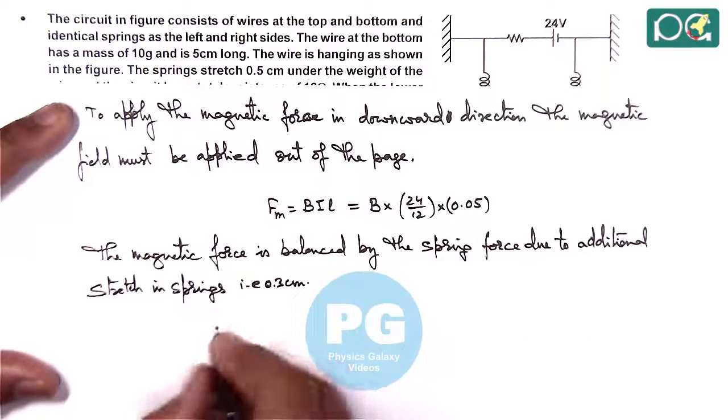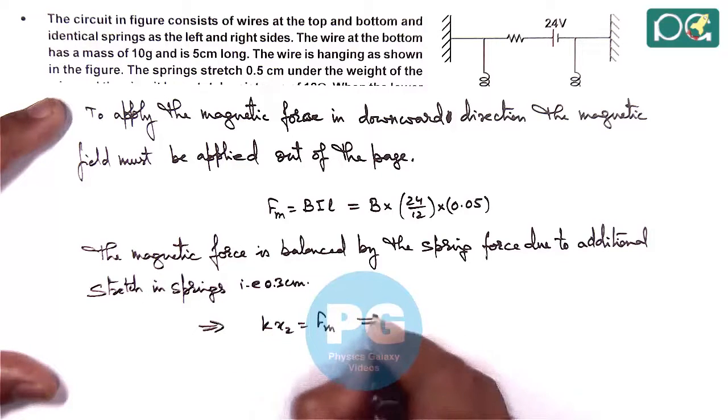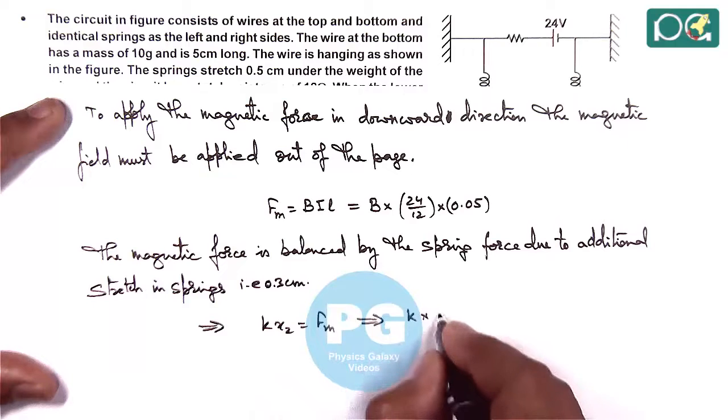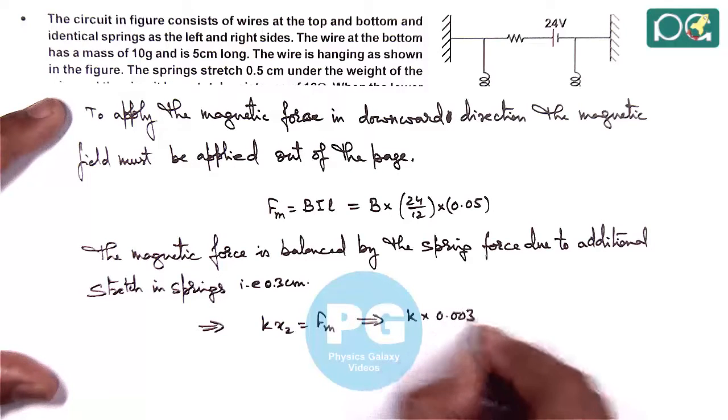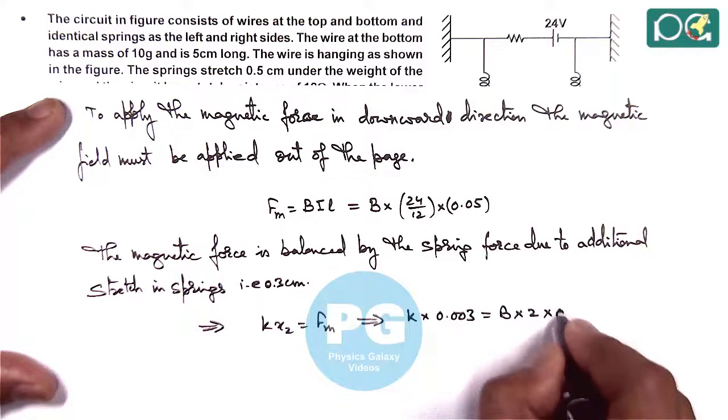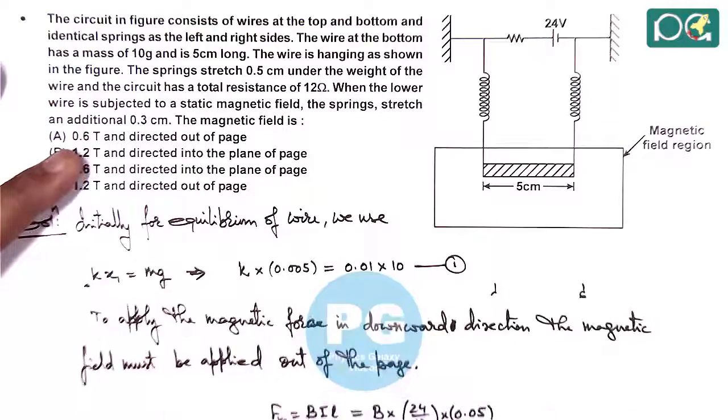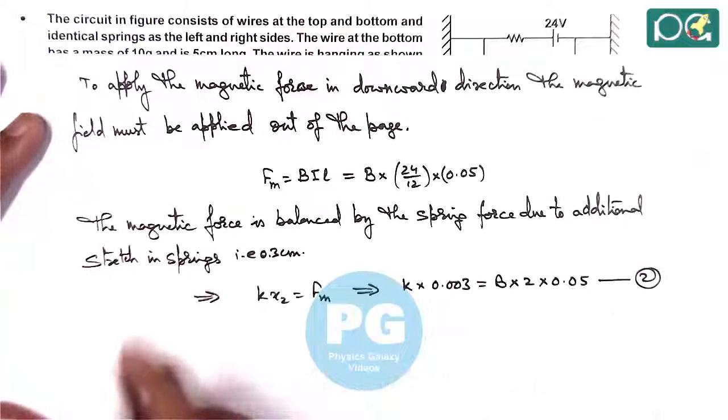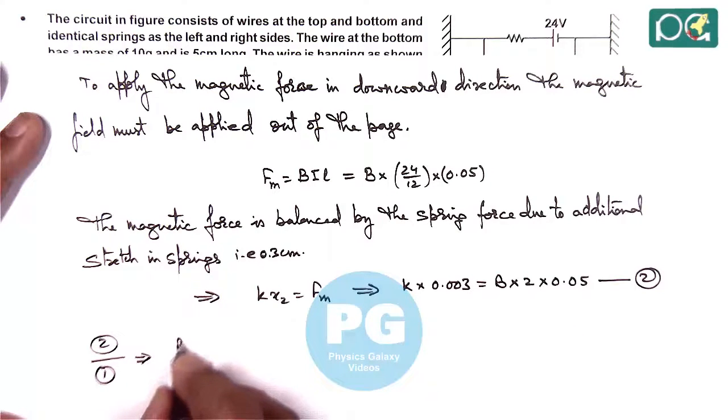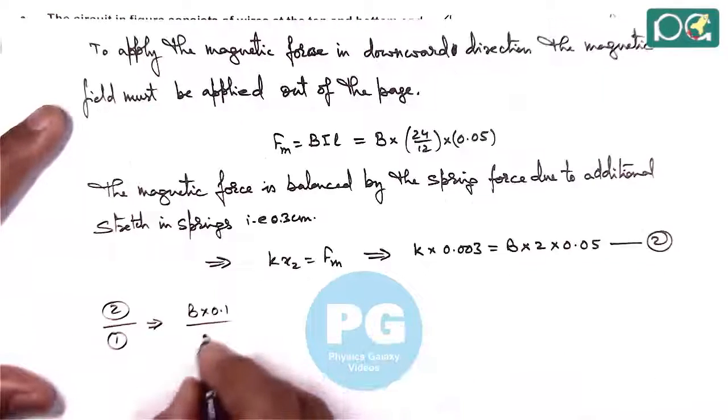So here we use kx₂ equals the magnetic force, which gives us k multiplied by 0.003 equals B multiplied by 0.05. This is our equation 2. From equations 1 and 2, if we divide these, it gives us the value of B.